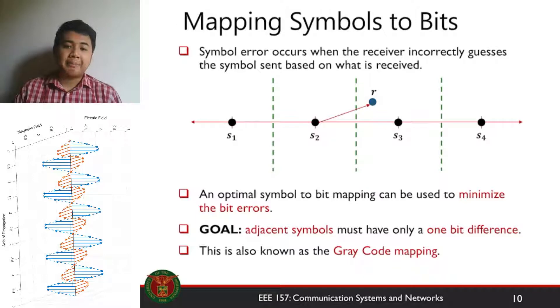First things first, how do we map the symbols to the bits? We've talked about in digital modulation, we're taking L bits to map into symbols. Different combinations of L bits will be mapped to different symbols in a constellation.